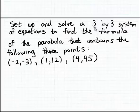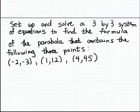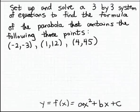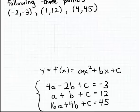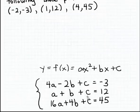This system of equations is going to be called a three by three system of equations because it contains three equations and three unknowns. The three unknowns are going to be the three coefficients for the formula for the quadratic function — the parabola that contains these three points. In a previous example, we had already set up this three by three system of equations.